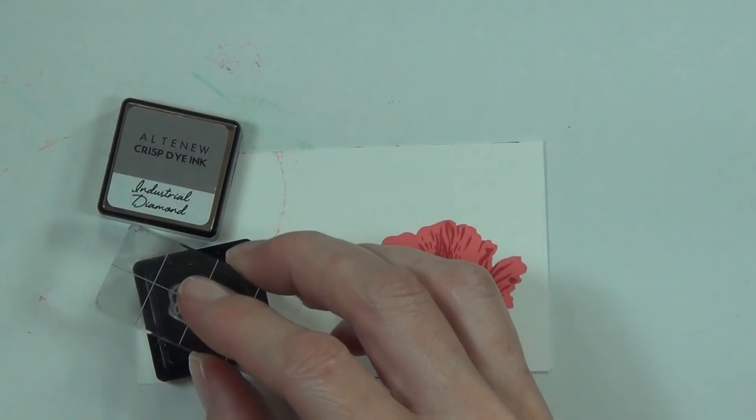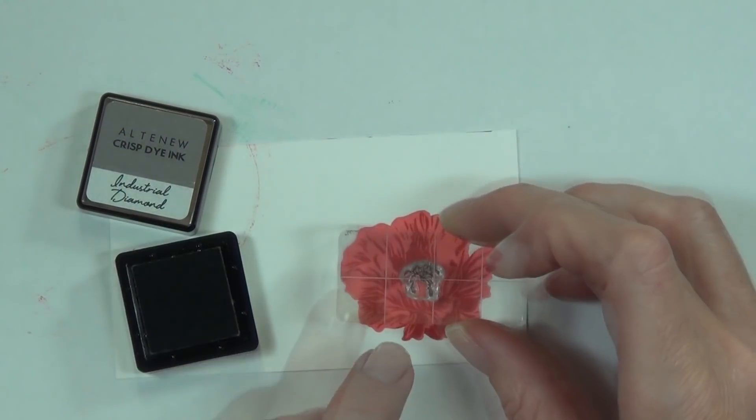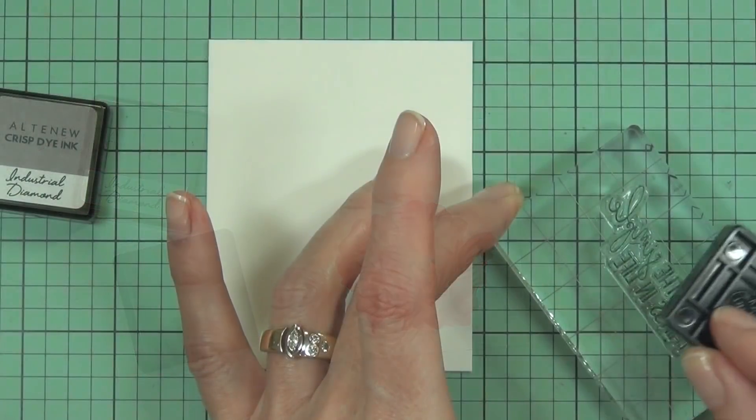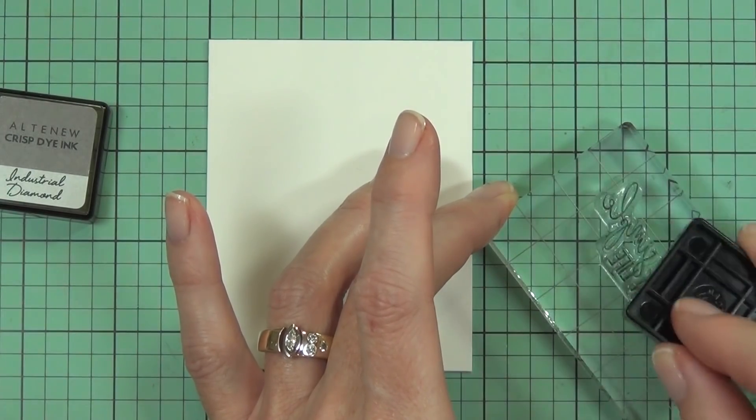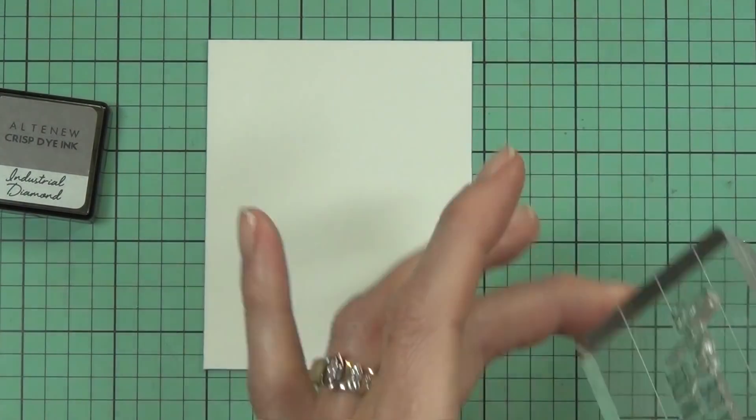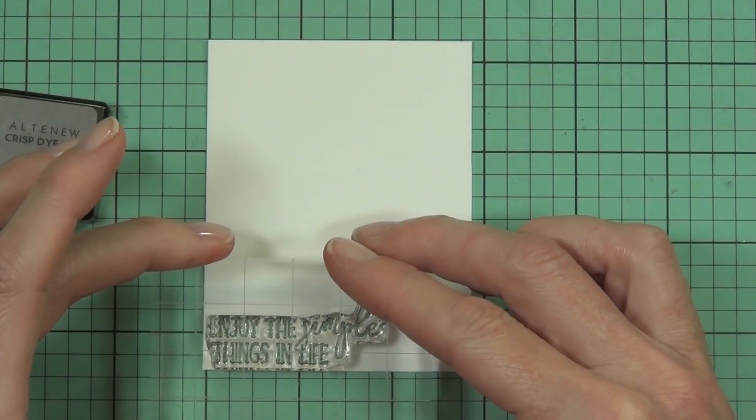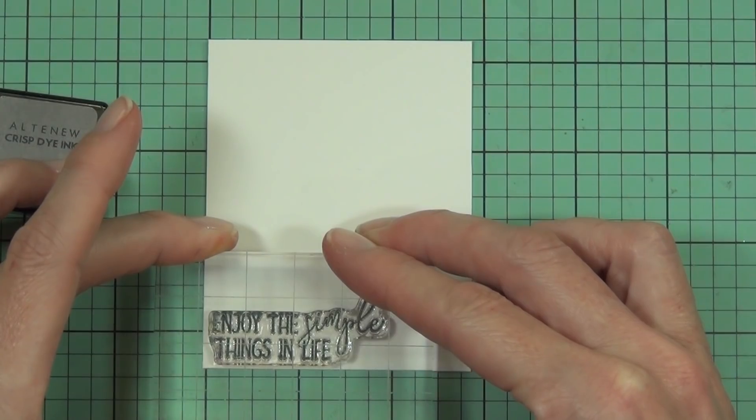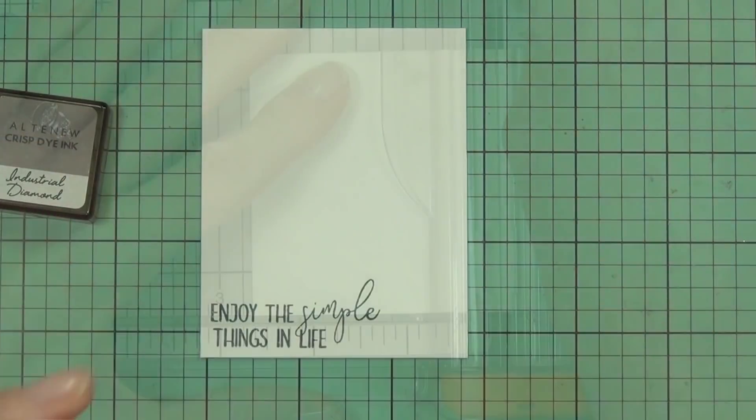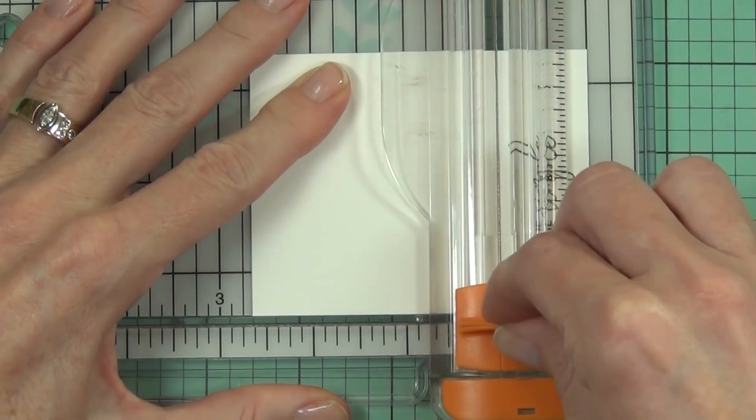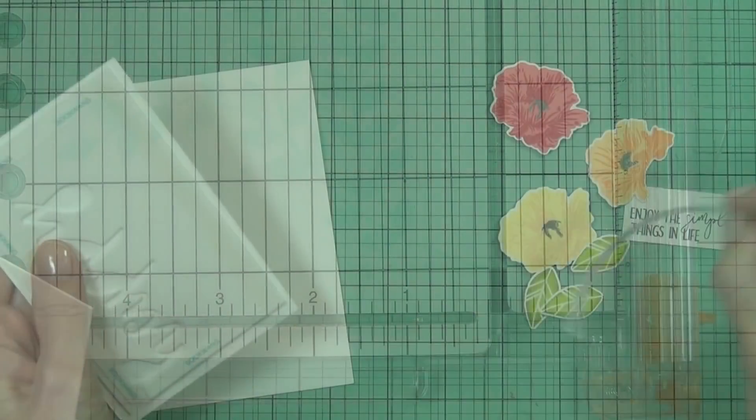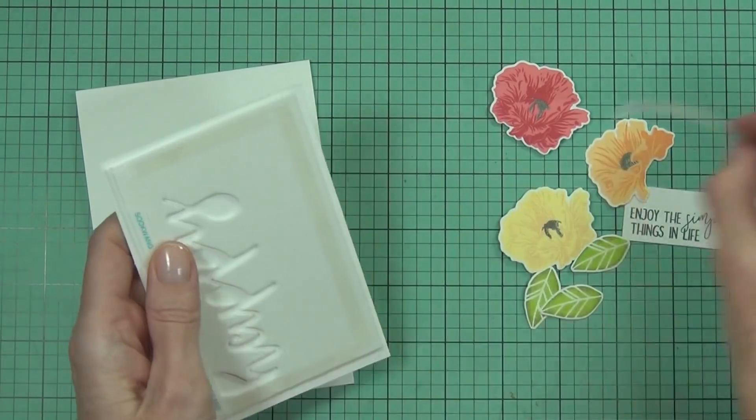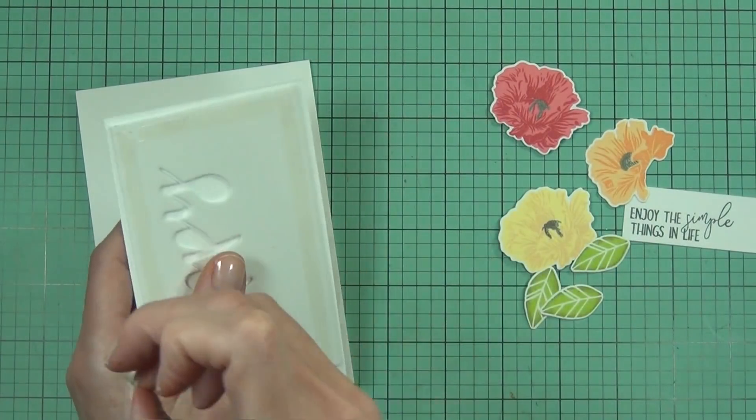There is an outline stamp in this set as well, I just chose not to use it today. That's one of the best things about these layering stamp sets. You can use either part of them, all of them, some of them, only the outline. Everything, it doesn't matter. So easy and versatile. The sentiment comes from the Poppy Field stamp set as well, stamped in Industrial Diamond.